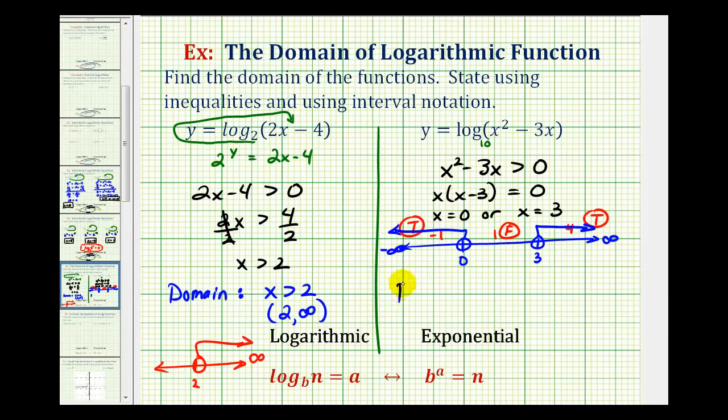So the domain using inequalities would be x is less than zero or x is greater than three. Using interval notation, we'd have the interval from negative infinity to zero, union three to infinity. It does not include these endpoints. Therefore, we have open intervals on three and zero.